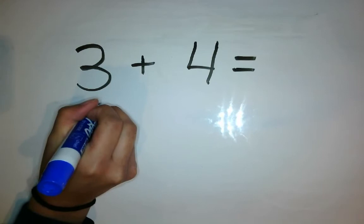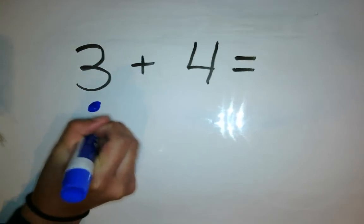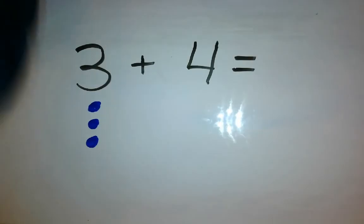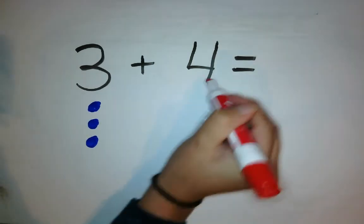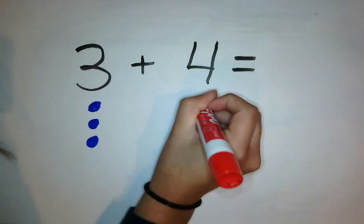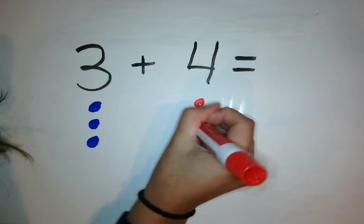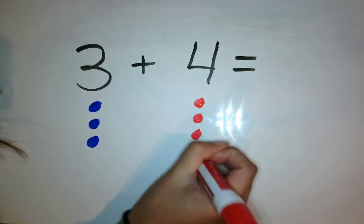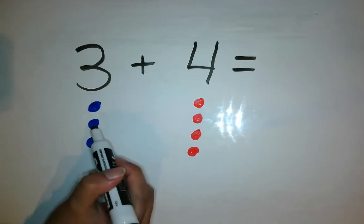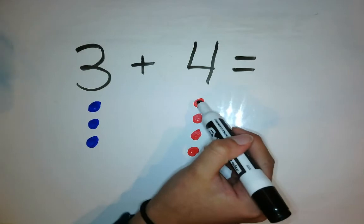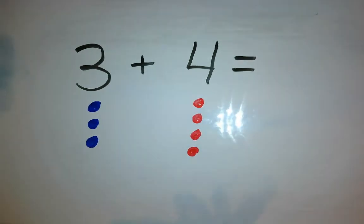So, this is the number 3, so I need 3 dots. 1, 2, 3. Alright, we're adding, so we're putting two sets of numbers together. I'm going to look at this number. This is 4, so I need 4 dots. 1, 2, 3, 4, 5, 6, 7.